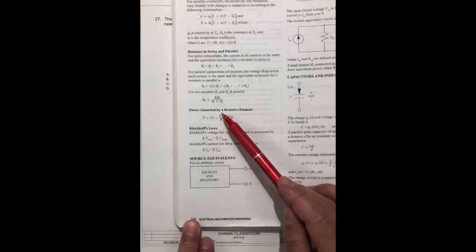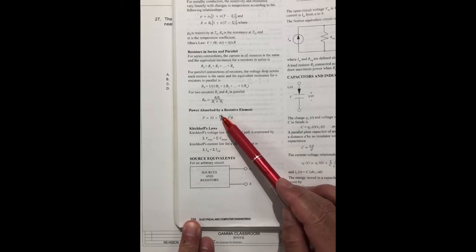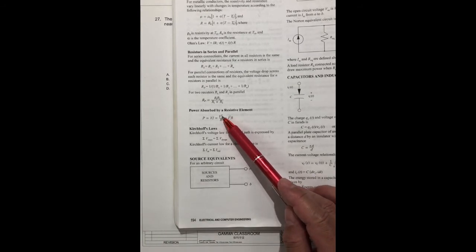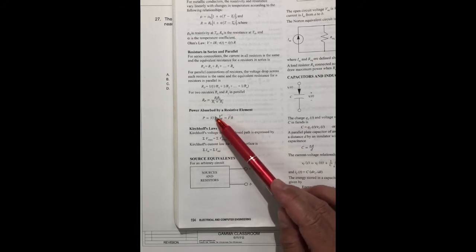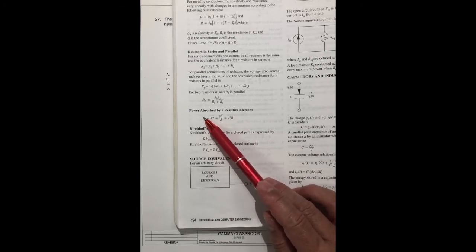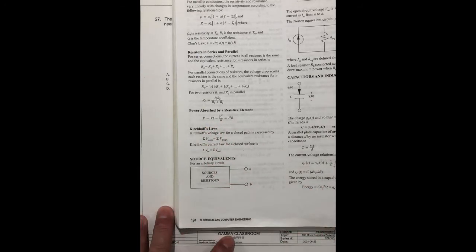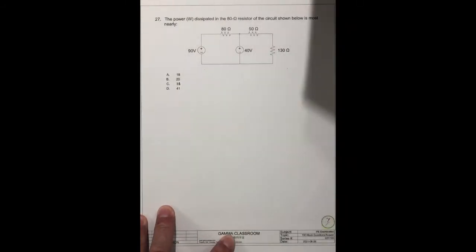Now, you see this formula. If we know the voltage across the resistor and we know the resistor, then we can find out the power absorbed by the resistor. That means the power dissipated in the resistor.